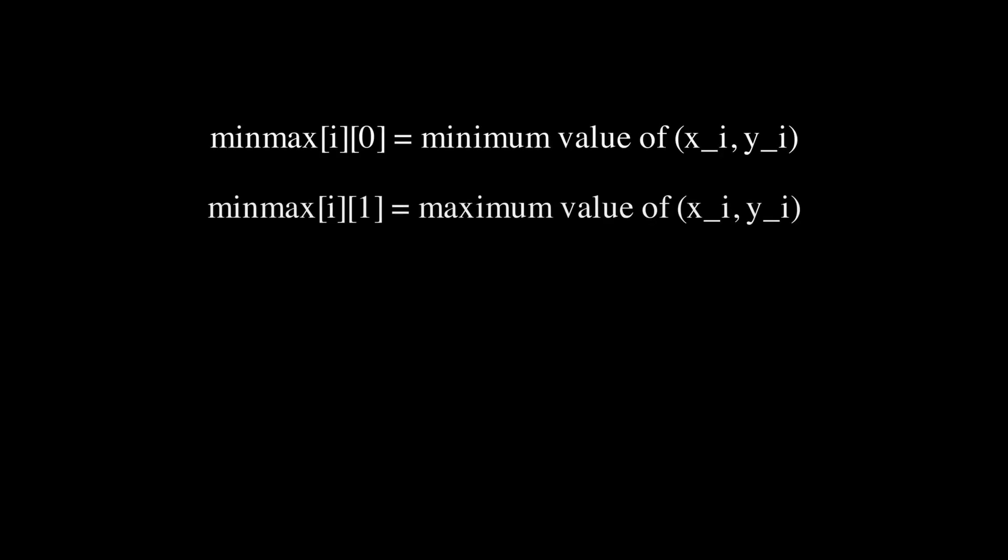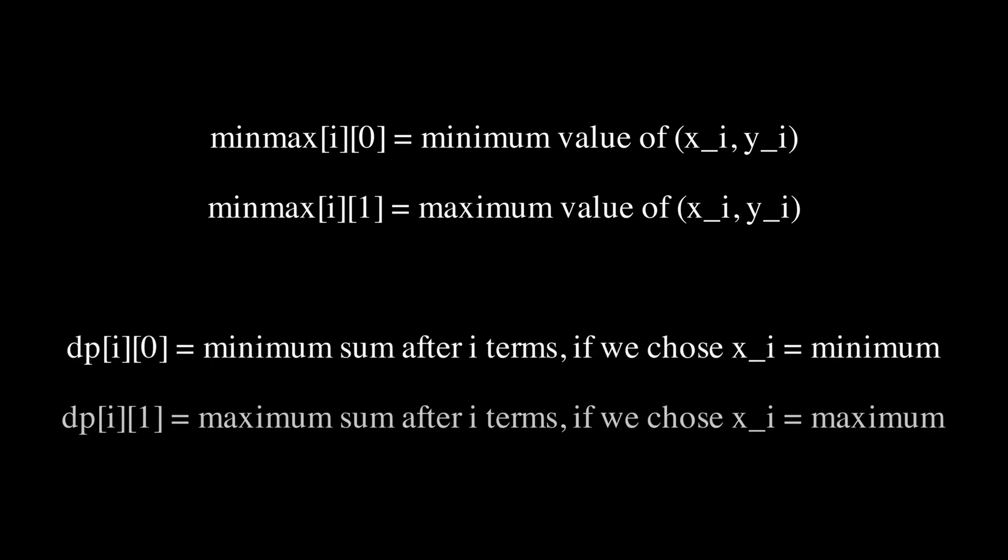Let minmax i0 be the minimum value of the i-th, the xi and yi, the minimum value of that, and minmax i1 to be the maximum value. And let dpi0 be the minimum sum of the first i terms if we have chosen xi to be the minimum and let dpi1 be the minimum sum of the first i terms if we have chosen xi to be the maximum value.